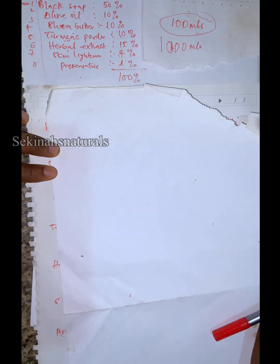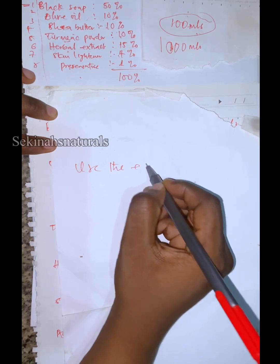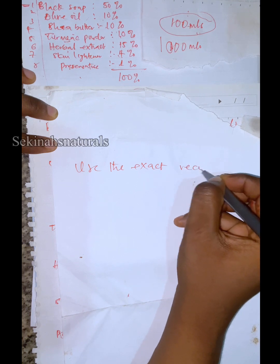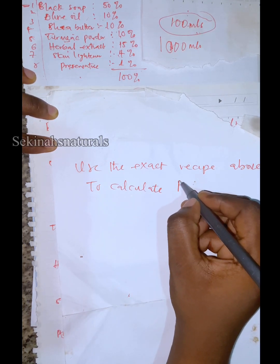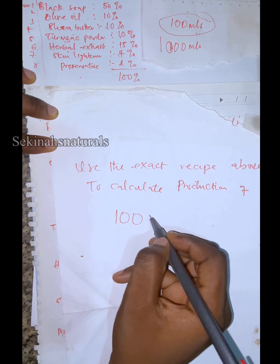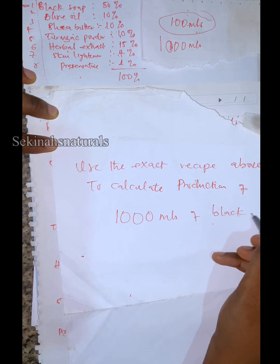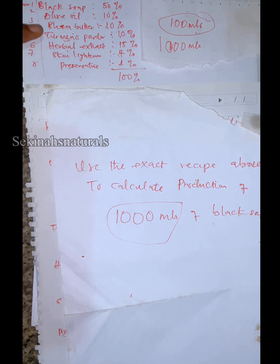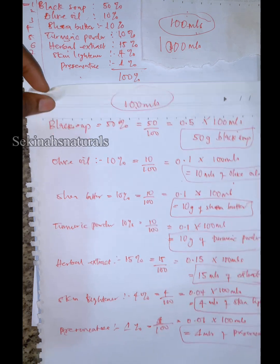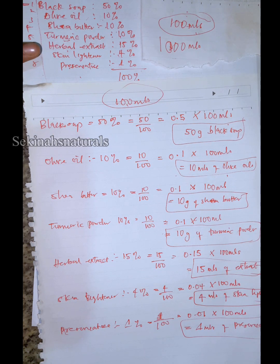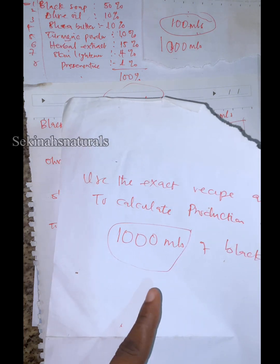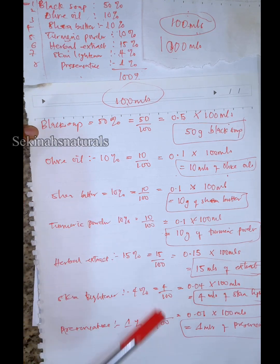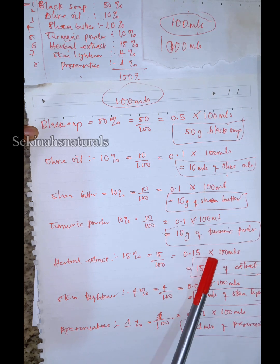So what we are going to do is: you guys are going to use this same exact recipe to calculate production of 1000 mils of black soap. You are going to calculate 1000 mils of black soap using this exact recipe, in exactly the same format and method that I have used here. Don't worry — I'm going to write this recipe down in the group, so make sure to pick it out.